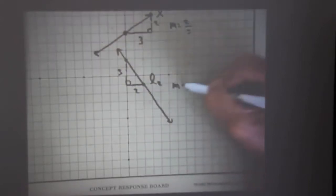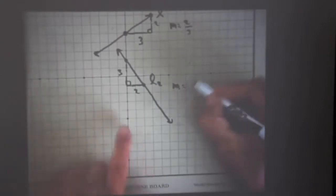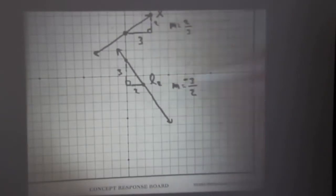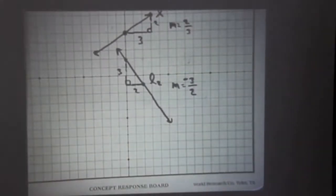Therefore the slope of line two is again rise over run, three over two. And it is negative. It's negative because clearly this is a negatively sloping line.